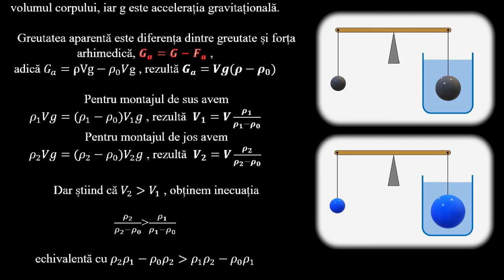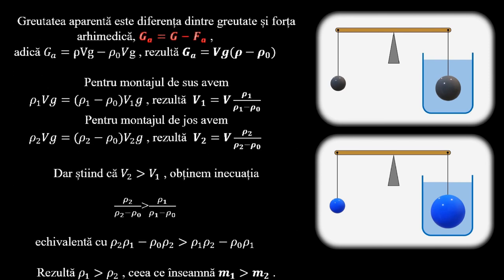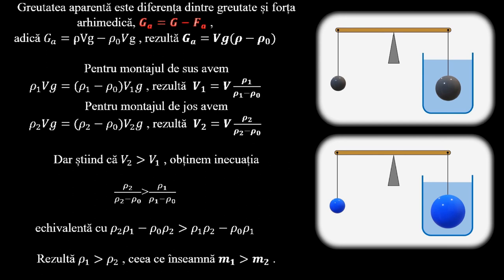Adică ρ·V·g - ρ0·V·g, și de aici rezultă că greutatea aparentă se poate calcula cu formula V·g·(ρ - ρ0).